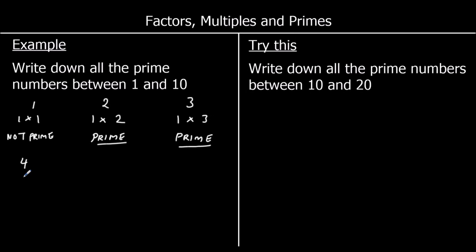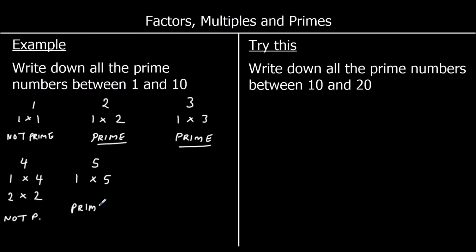Number 4: we've got 1 times 4 and 2 times 2, so the factors of 4 are 1, 2, and 4 — it's got three factors, so it's not prime. Number 5 is only 1 times 5, it's got two factors, so it is prime. 6 is 1 times 6 and also in the 2 times table: 2 times 3, so it's got four factors — it's not prime.